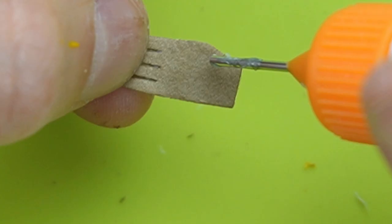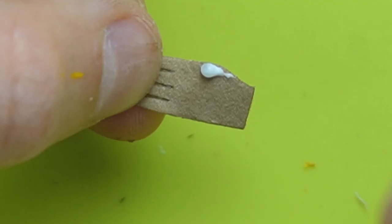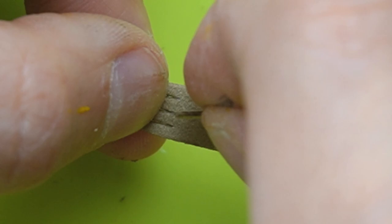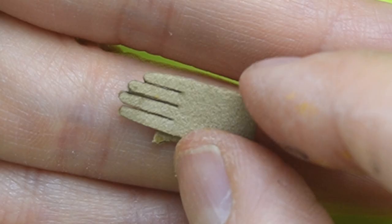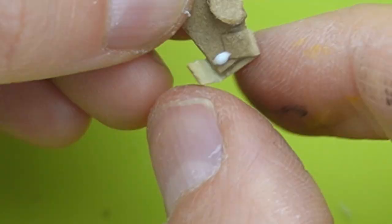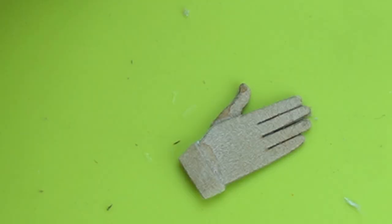I did the same with the thumb pieces and looked at my own hand to get a reference of where the thumb should be glued. Then I finished the glove with the wristband.